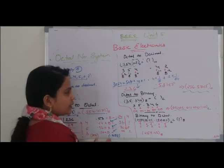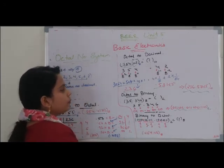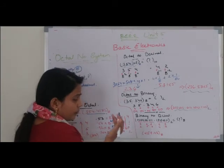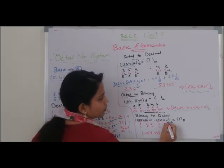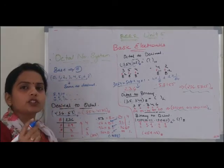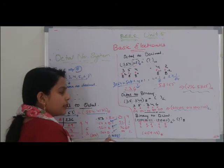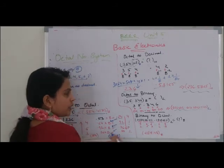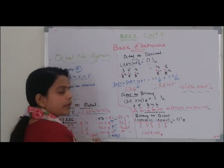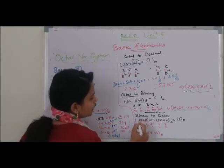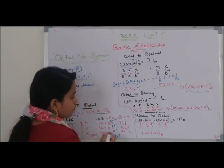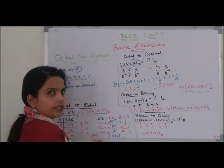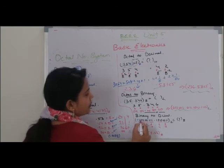एक ज़रूरी बात: अगर mixed number दिया हुआ है तो point के इस तरफ whole number है और point के उस तरफ fraction part है। Fraction part के लिए, अगर last में 3 numbers की pairing नहीं हो रही तो हम zero add कर सकते हैं। Similarly whole part के लिए, point से left की तरफ right to left direction में 3-3 की pairing करेंगे। अगर pairing पूरी नहीं होती तो हम beginning में 0 add कर सकते हैं।